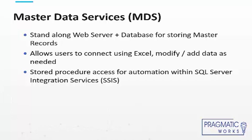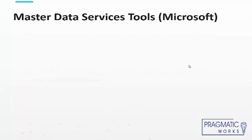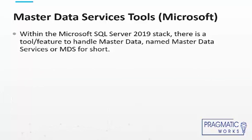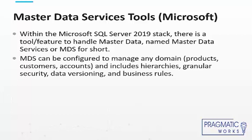We can also access it through stored procedures and automate through integration services. It comes with SQL Server — the version we used was 2019. It can be configured for any domain: products, accounts, and customers. It includes hierarchies — a natural hierarchy could be country, state, city, zip code — but we can also have custom hierarchies based on the specific organization for different reasons.